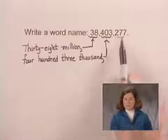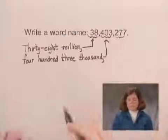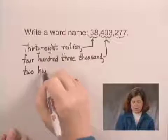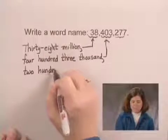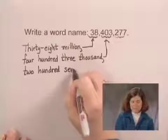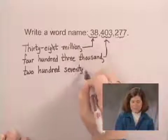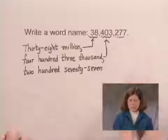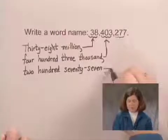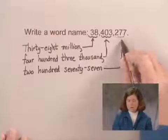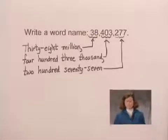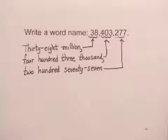We look at the number inside the last period, which is 277. We write 277, and since that's the ones period, we do not have to write the value of that period after that number. So the word name for this number is thirty-eight million, four hundred three thousand, two hundred seventy-seven.